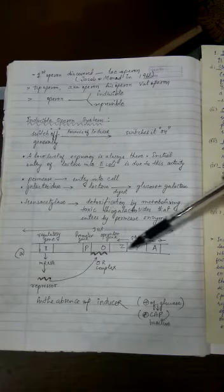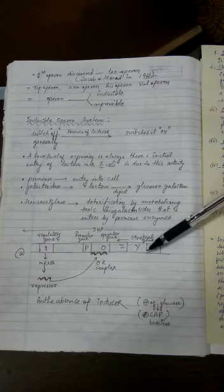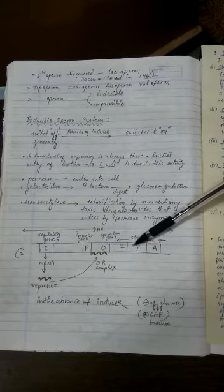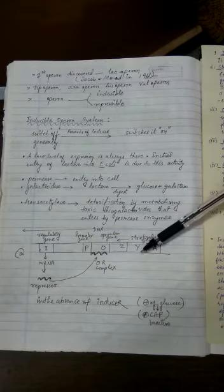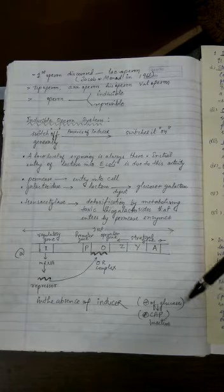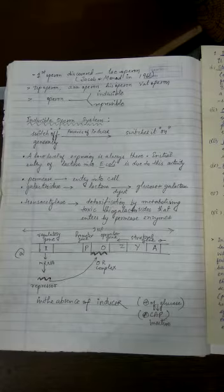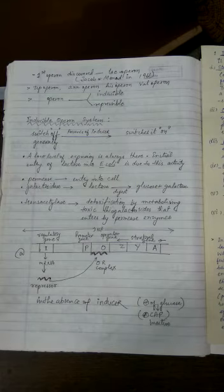That's why there will be always some amount of permease enzyme. That's why the permease enzyme will always allow the lactose to enter inside if it is available in the surrounding. I hope this point is clear to you that how first lactose enters inside.